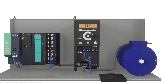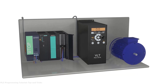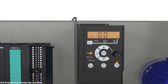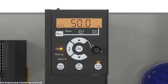Let's start today's session by setting some parameters in the VFD. We are using the FC51 Danfoss VFD in today's tutorial. First we will set parameter 3-02 to 0.0 Hz — this is the minimum output frequency of the VFD. Next we will change parameter 3-03 to 50 Hz — this is the maximum output frequency of the VFD.